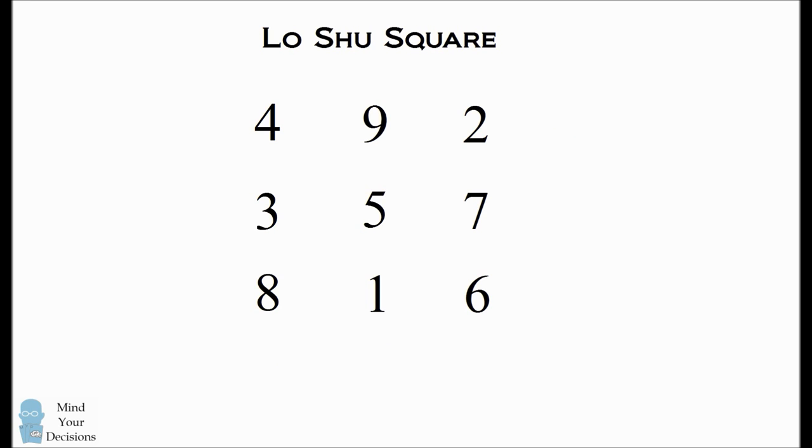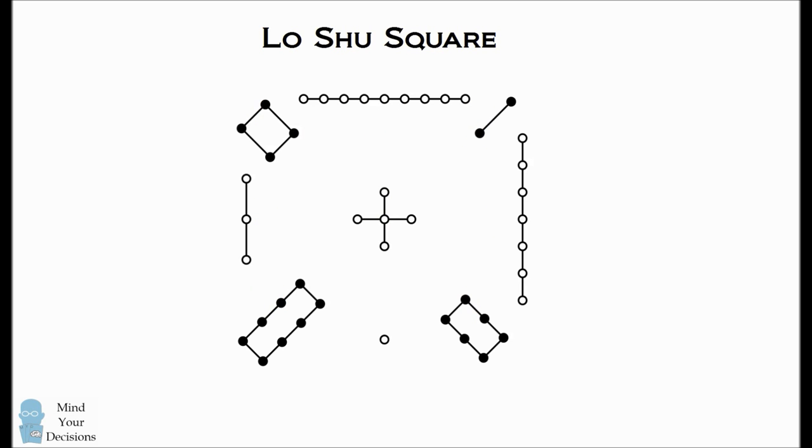This is a magic square. It's also known as a Lo Shu square. This pattern also holds a very special property which the ancient Chinese discovered.